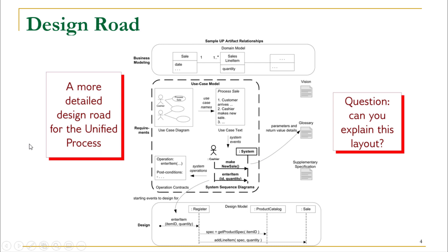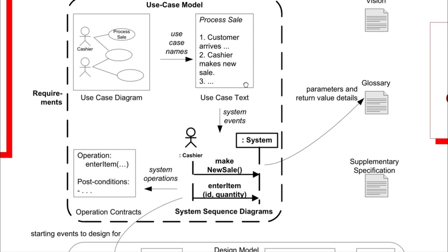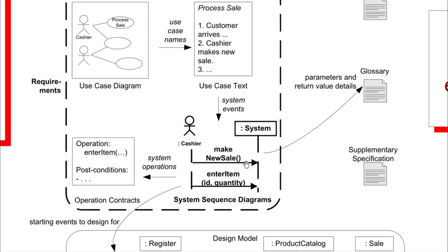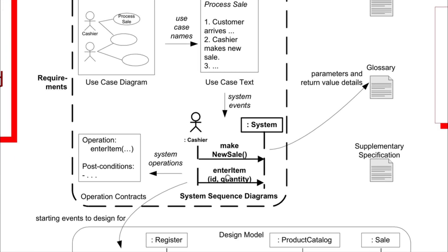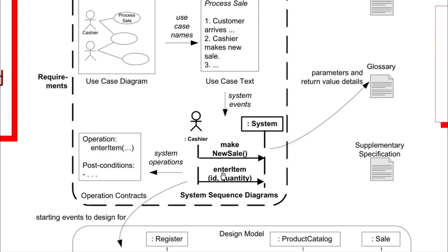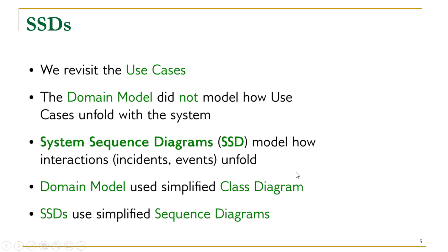Looking at these same activities in the context of the unified process model, the sequence includes the use case diagram followed by the use case text, which was the input for the system sequence diagrams. We are going to create the system sequence diagrams with the help of the use case text that we have already written. This system sequence diagram artifact is going to be an input for the operation contracts, which is our next lecture.